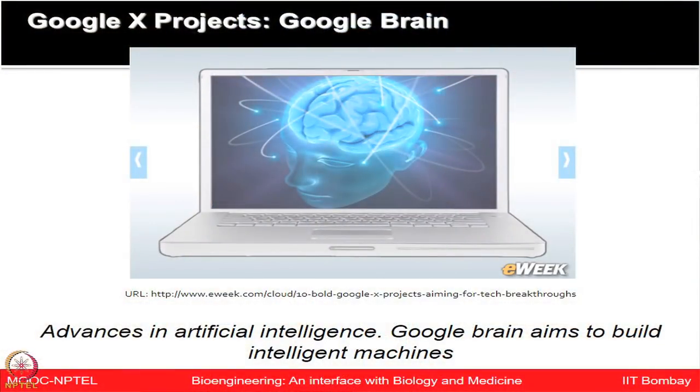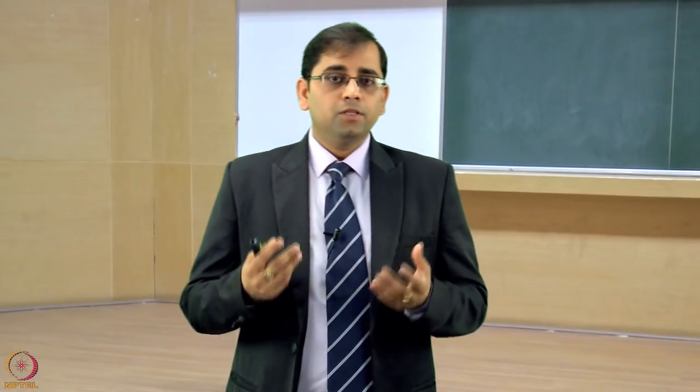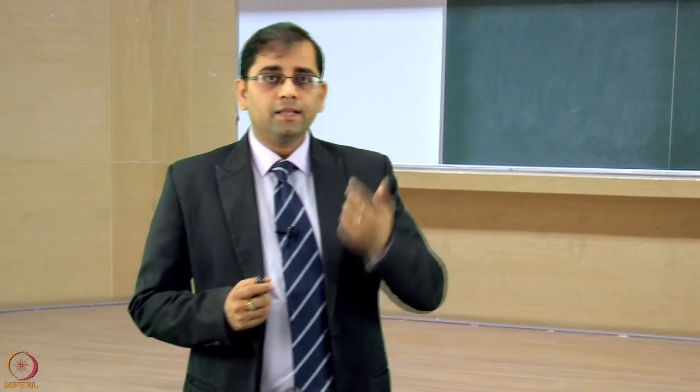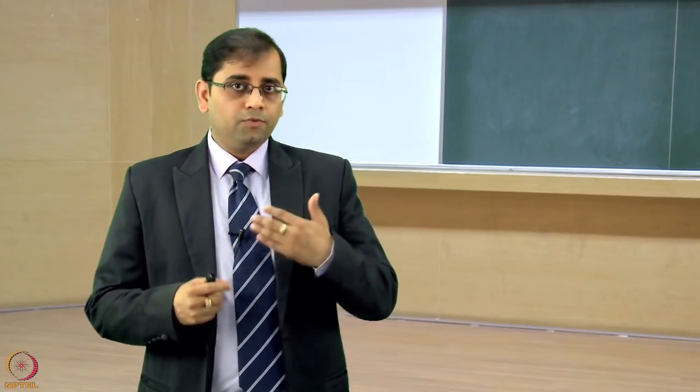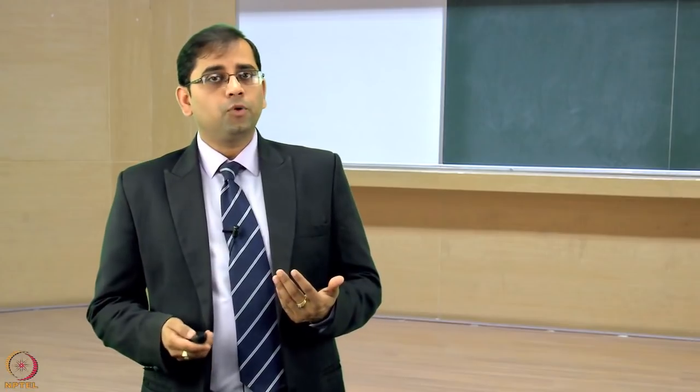Let us look at the Google X project, or Google Brain. There is a lot of research happening in artificial intelligence — how to build intelligent machines by incorporating AI. Google projects also incorporate smart contact lenses. Just imagine wearing a contact lens with sensors that could measure glucose levels, with chips monitoring glucose throughout the day. That data is sent to a mobile device alerting an individual to dips in glucose level — real-time monitoring of diabetes and similar problems, directly in contact with body fluid.